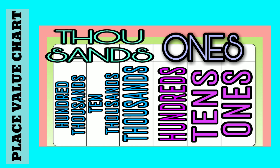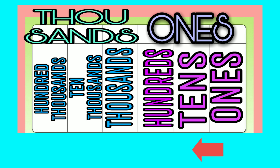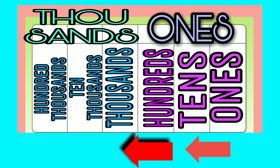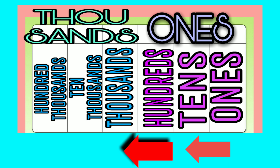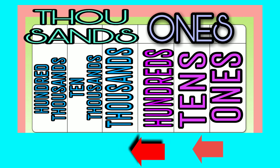Now let's go to our topic: place value. To identify the place value, we are going to use the place value chart. In a place value chart, you can see the period names and the place values. We name the place value from the rightmost digit to the leftmost digit. From the right we have ones, followed by tens, followed by hundreds, followed by thousands, then ten thousands, and then hundred thousands. It is very important that you know the correct order of place value from right to left.